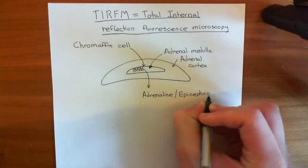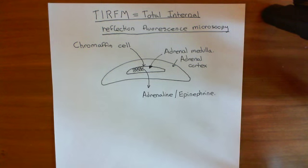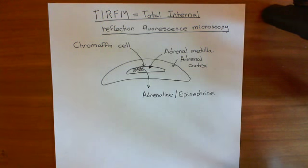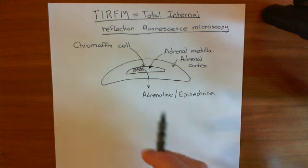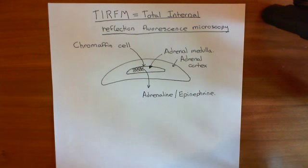These chromaffin cells secrete adrenaline/epinephrine into the bloodstream, and their level of secretion is elevated in response to sympathetic overflow. So when some stressful situation happens and we're preparing for the fight-or-flight response, the sympathetic nervous system fires diffusely and activates the adrenal medulla cells — specifically these chromaffin cells — to start releasing their adrenaline/epinephrine into the bloodstream. That causes many effects in the body, such as making the heart beat faster and stronger.